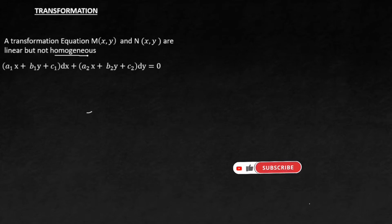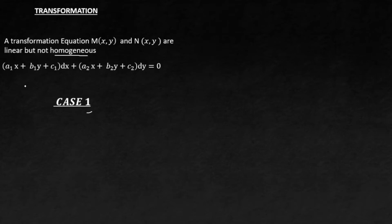Our target is this: because we will be given an equation that is not homogeneous, if we want to solve it we have to reduce it so that it becomes homogeneous. There are steps involved in doing that. There are two cases in the transformation method.